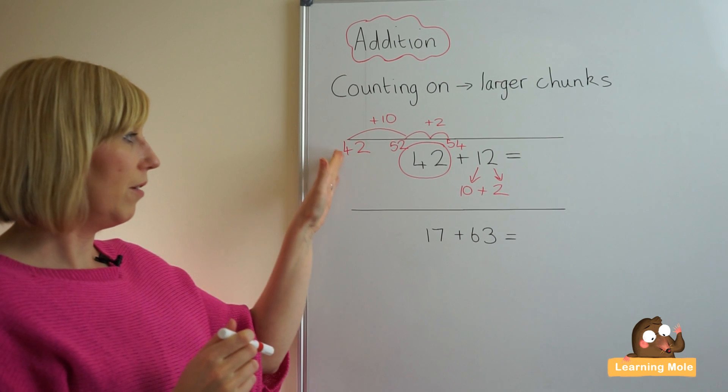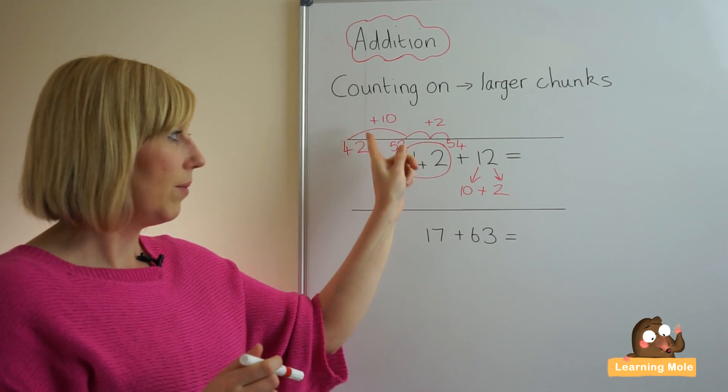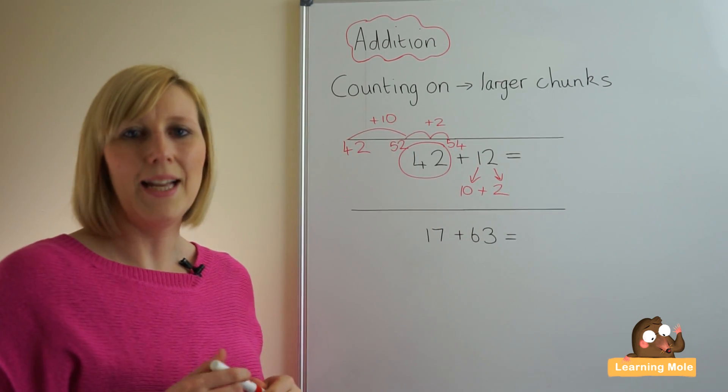So just going back, we put our 42 at the beginning, we added our chunk of ten, we added our chunk of two, and we got to our answer.